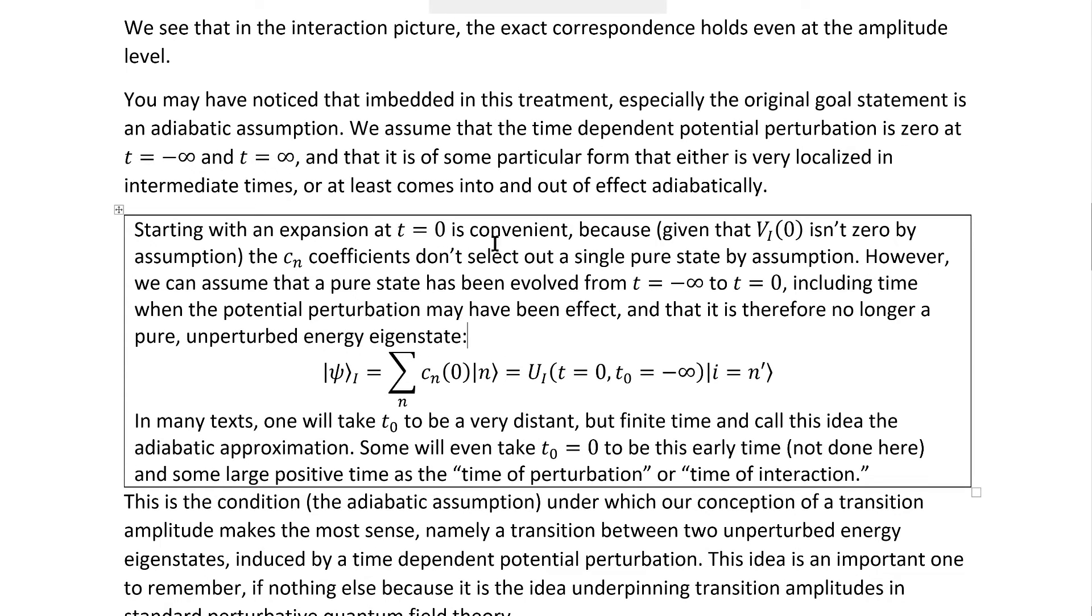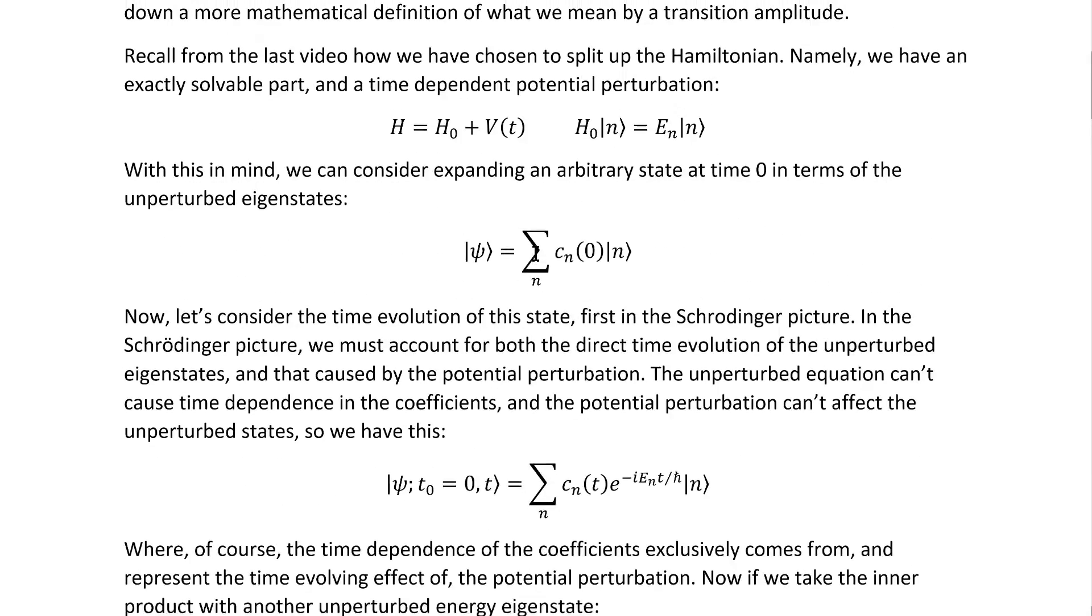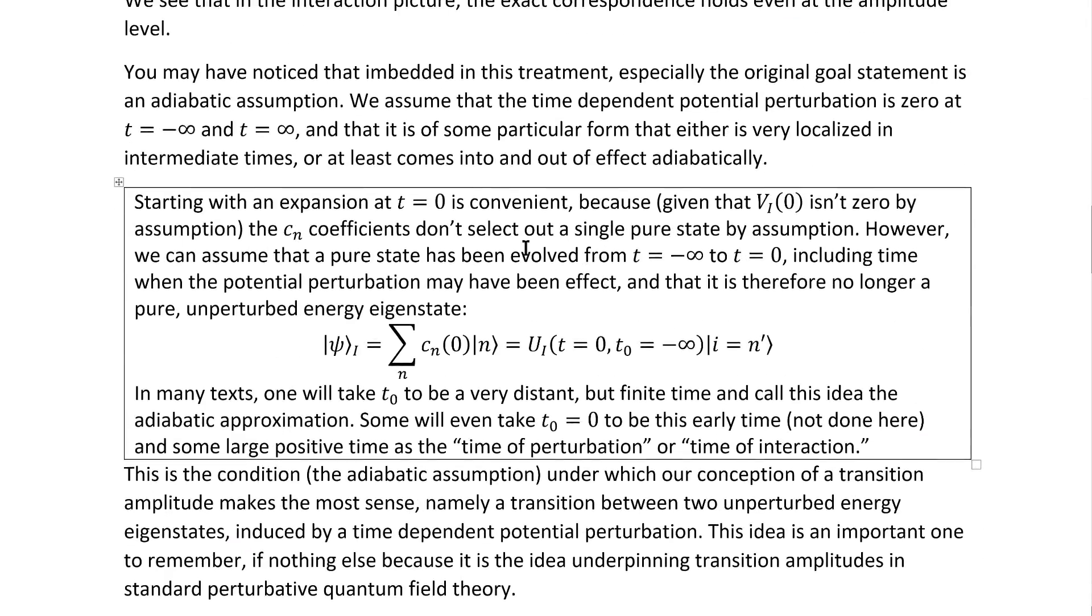Starting with an expansion at T equals zero, as we did, this is what I'm referring to, if that's not clear, is convenient because given that VI of zero isn't zero by assumption, the CN coefficients don't select out a single pure state by assumption, namely the initial state. However, we can still account for our adiabatic assumption because we can assume that a pure state has been evolved from T equals negative infinity to T equals zero to yield that psi state that we started with, including times when the potential perturbation may have been in effect, of course far away from negative infinity, and that it is therefore no longer a pure unperturbed energy eigenstate, as is apparent from the fact that we're bothering to do this expansion.